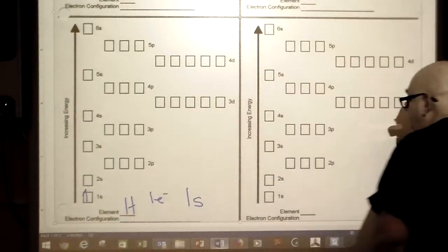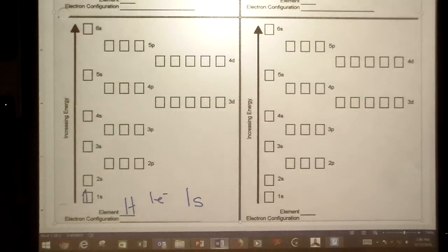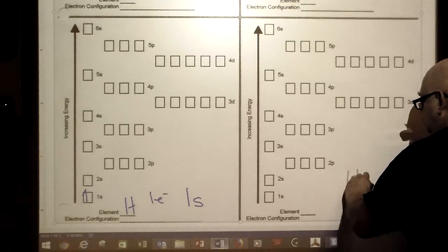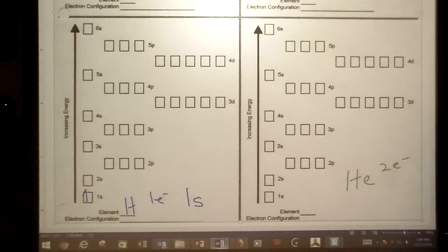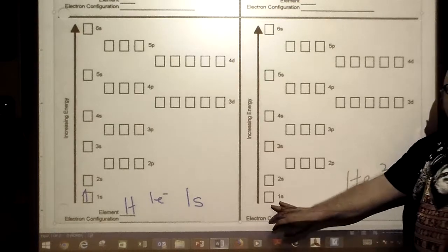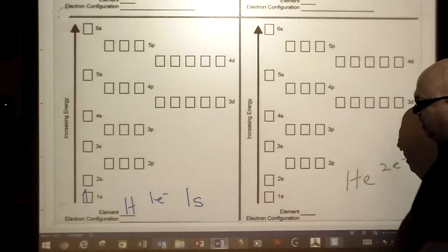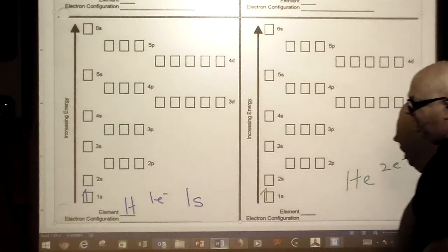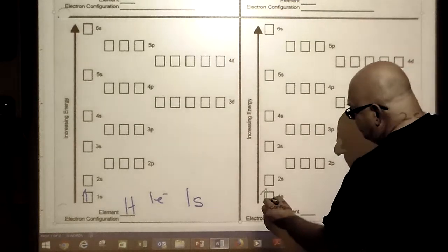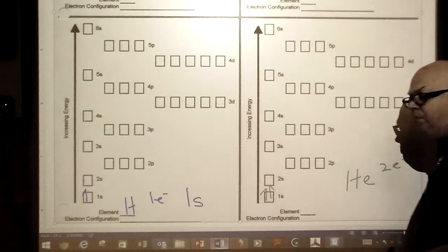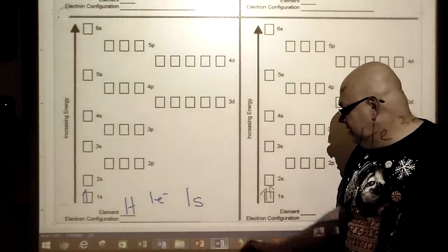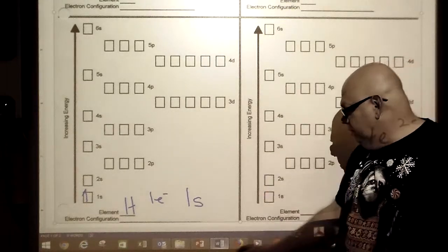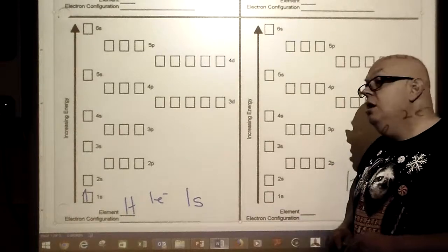Let's look at the next element, helium. Helium has two electrons. With helium we're going to have two arrows. We'll draw an arrow going up. Some people would say we can draw another arrow going up also, but no you can't.